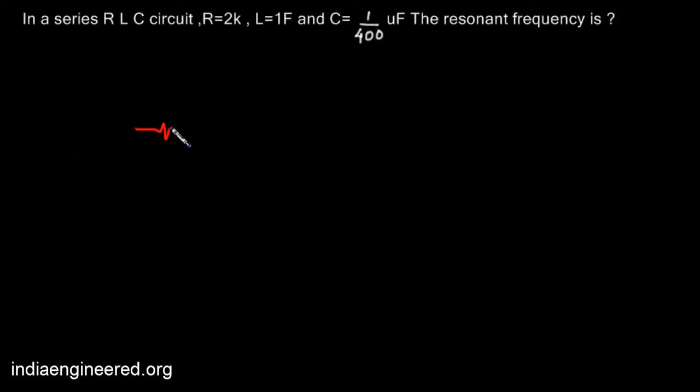We can say the circuit is like this: we have 2k, so we have an inductance of 1 henry and a capacitance of 1 by 400 microfarads. Now we are asked to find out the resonant frequency.